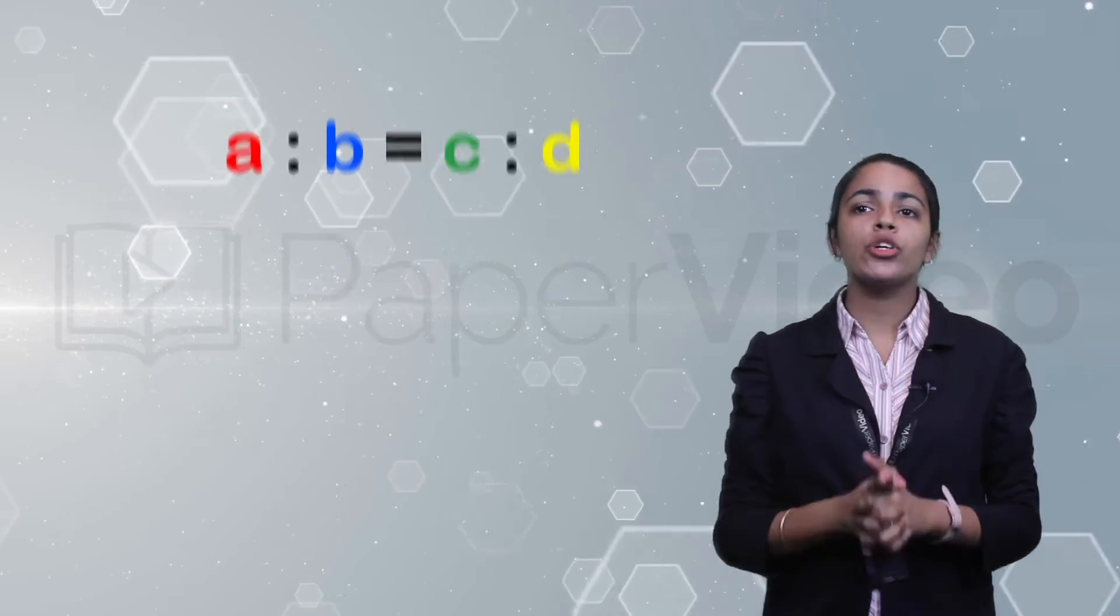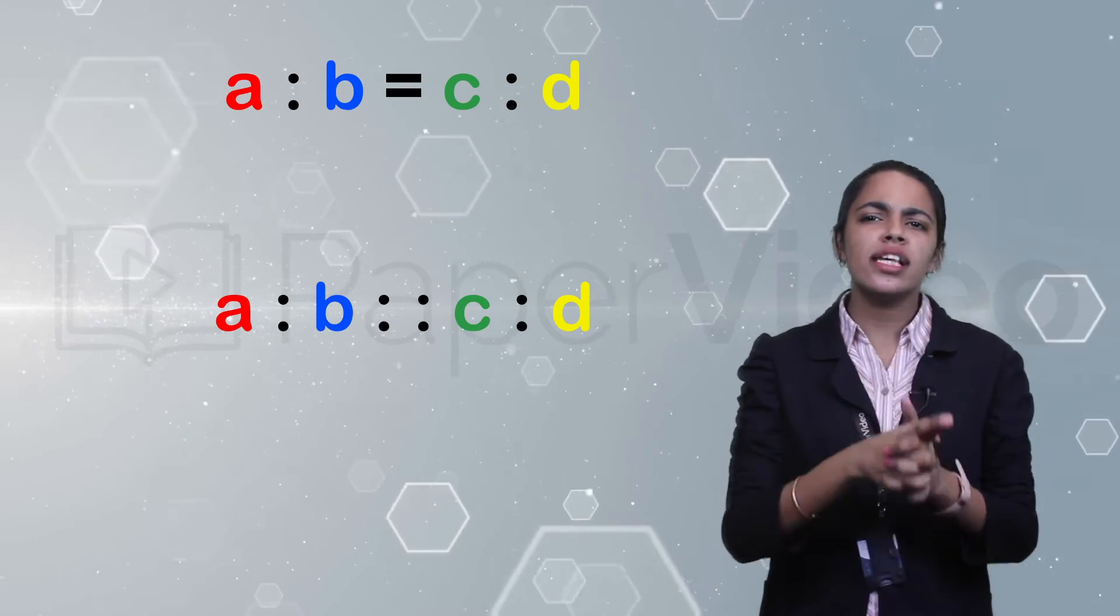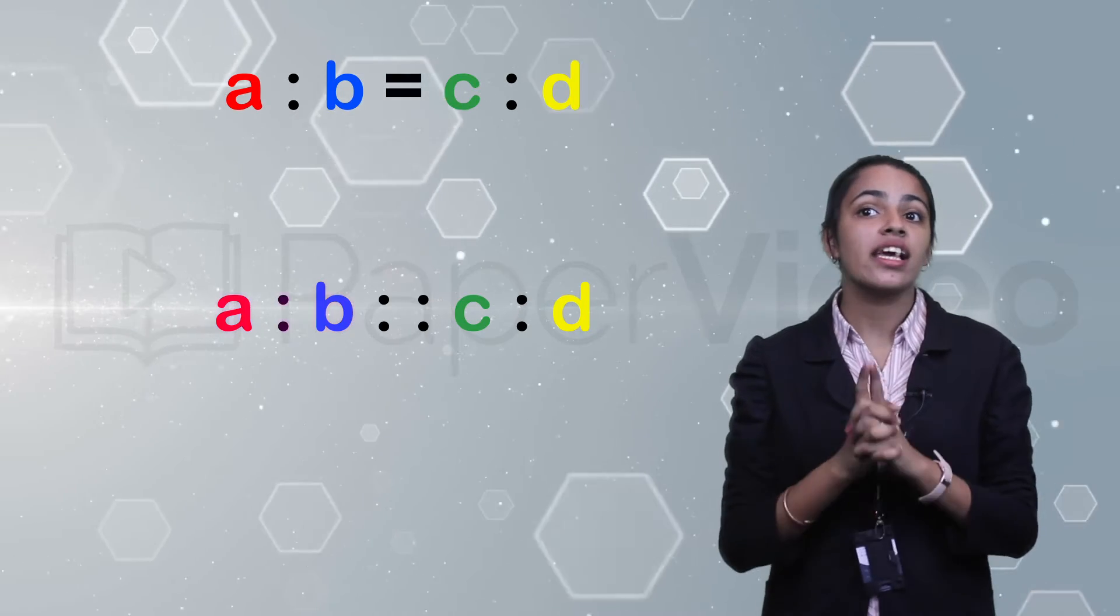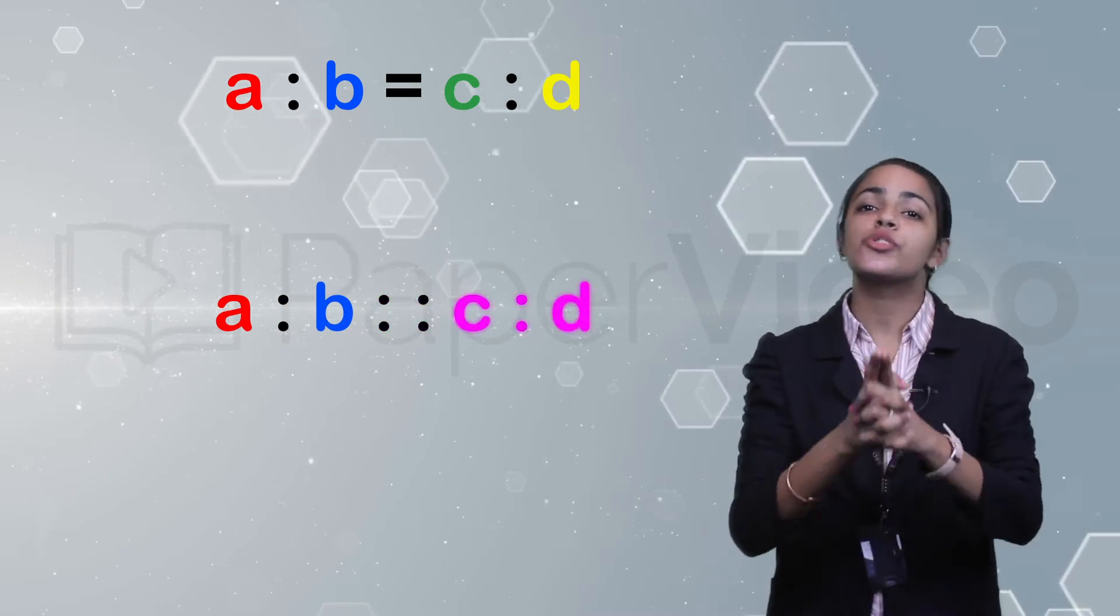A proportion is expressed as A colon B double colon C colon D and is read as A is to B is proportional to C is to D.